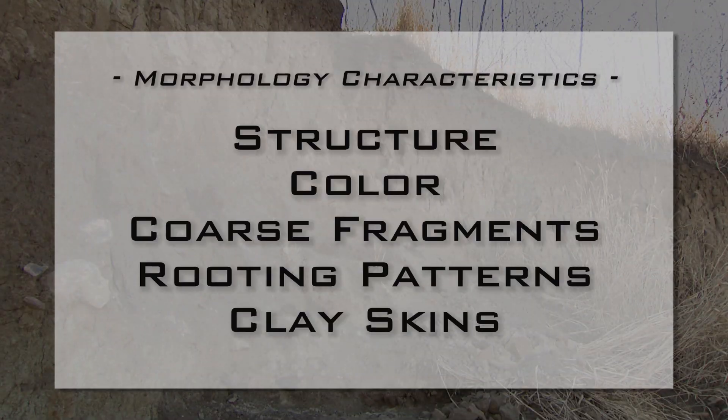Whether it's coarse fragments, changes in rooting habit, or whether the soil changes in structure — the main layers are the ones you want to get first. Get the easiest ones, then you can come back in later and subdivide. And then as you work through each major morphology — character, structure, color, coarse fragments, rooting patterns, clay skins, presence or absence — all these different descriptors will add to the body of information that at the end you can use to give a good solid, defensible nomenclature for those different layers.